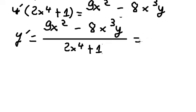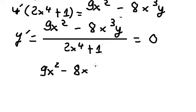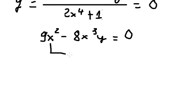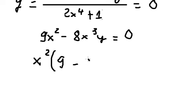Now we set the first derivative equal to zero. So we get nine s squared minus eight s to the power of three times y equals zero. We can do factorization with s squared.